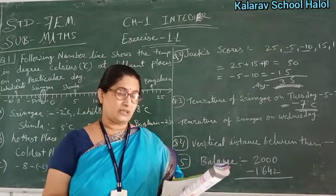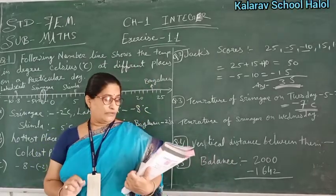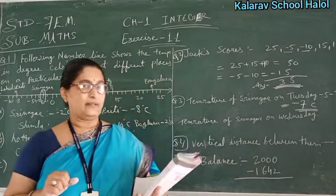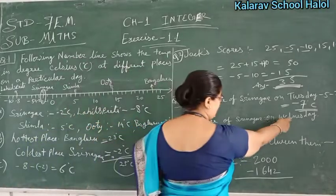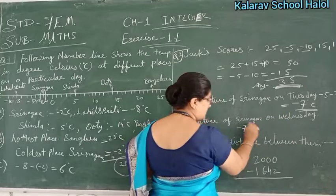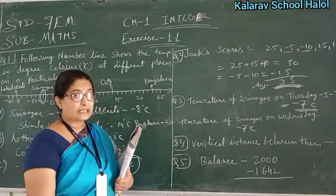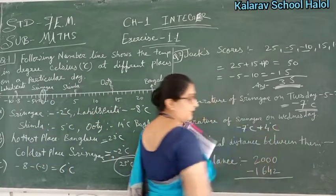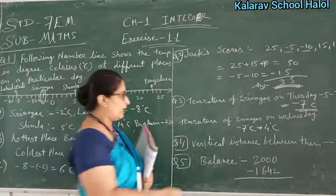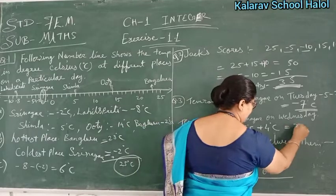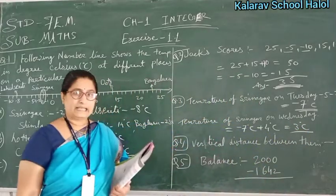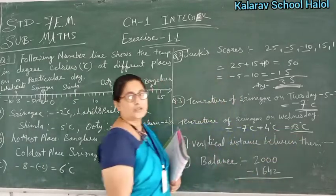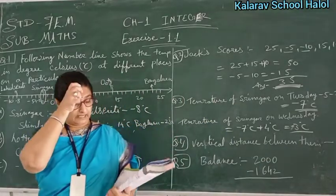Next in the same question: On Wednesday it rose by 4 degrees Celsius — what was the temperature that day? Tuesday was minus 7 degrees Celsius, and Wednesday it rose by 4. So the temperature went up, giving minus 7 plus 4 equals minus 3 degrees Celsius.